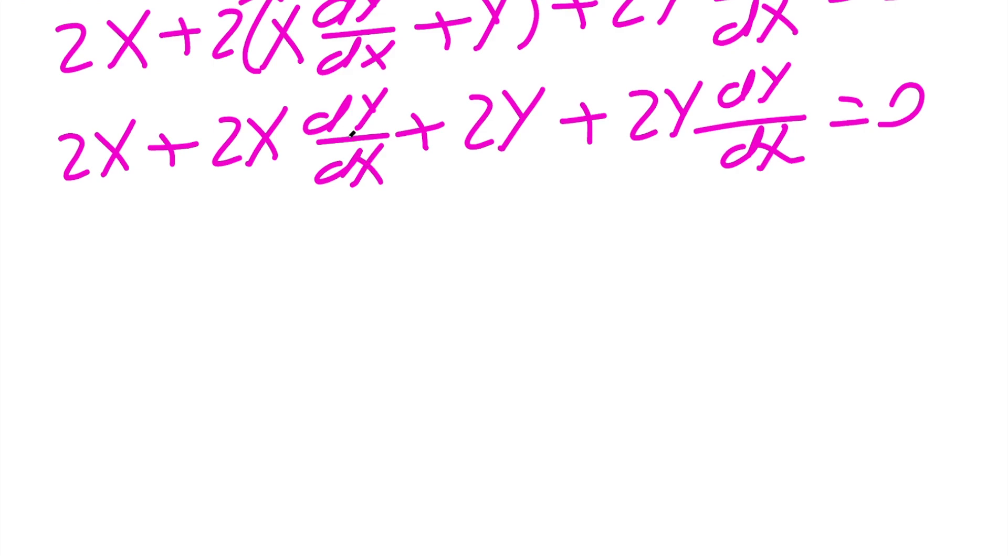At this point, we want all of our dy/dx terms on the left-hand side and all the non-dy/dx terms on the right-hand side. So we could say dy/dx times (2x + 2y).